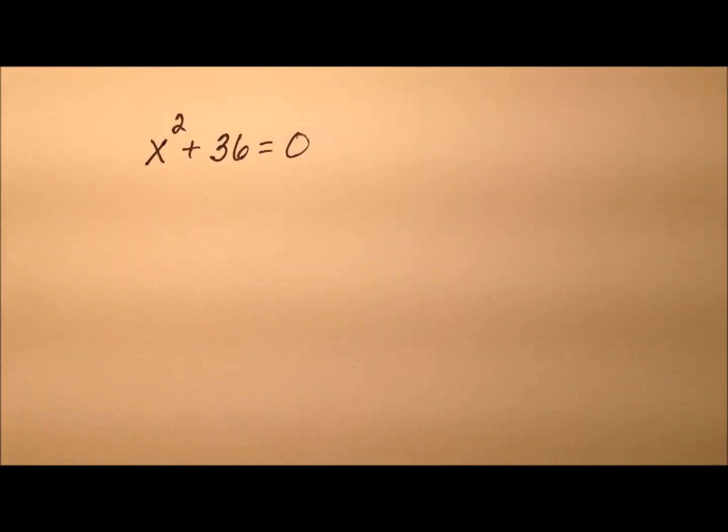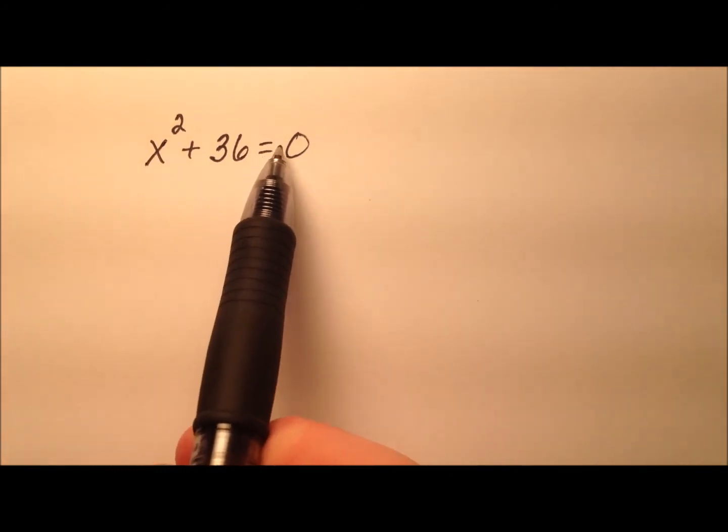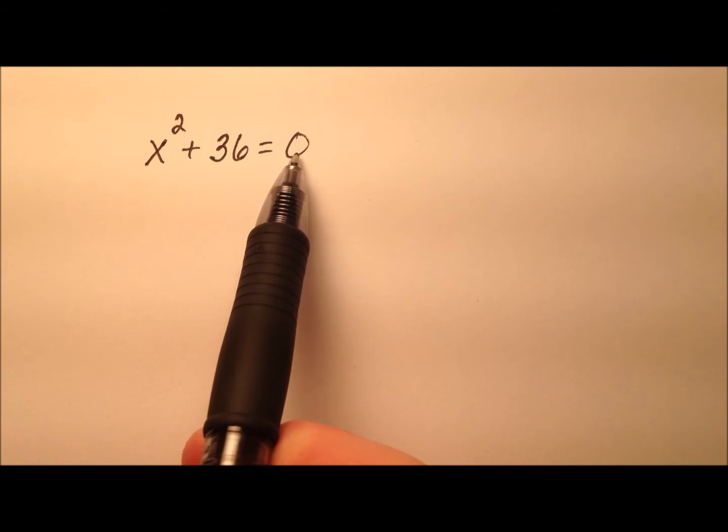In this example, I'm going to solve this equation by factoring. I see that all of my terms are on the left side and they're equal to 0, so that's where I need to be.